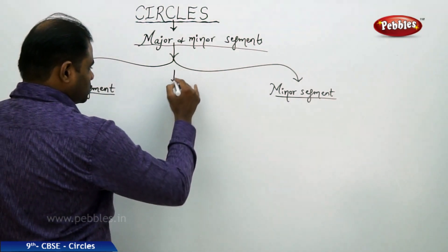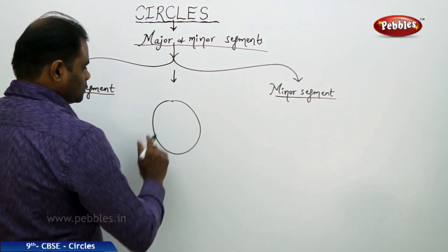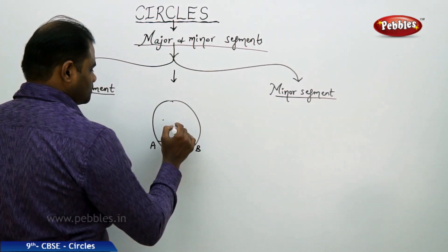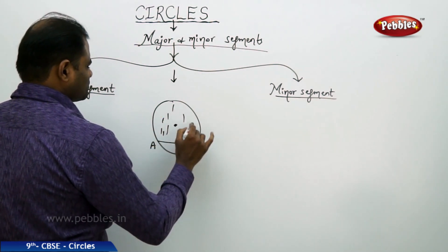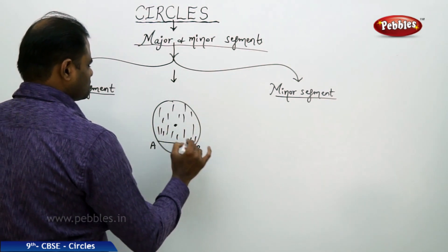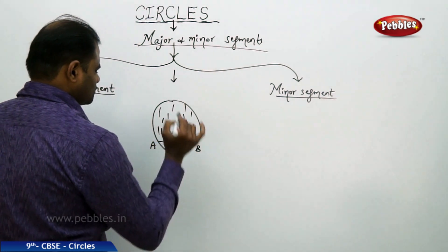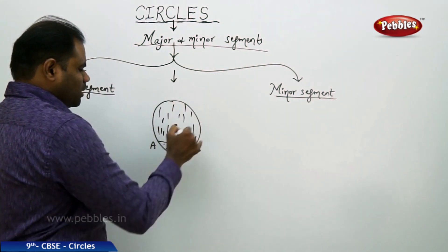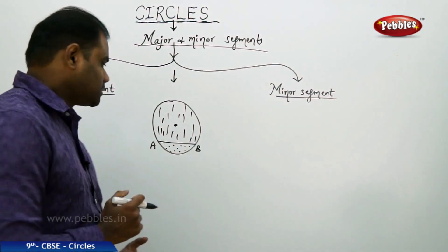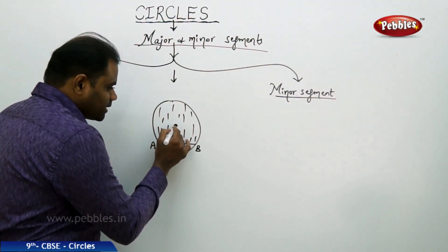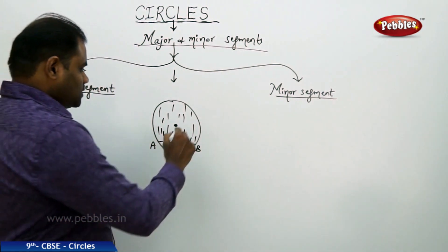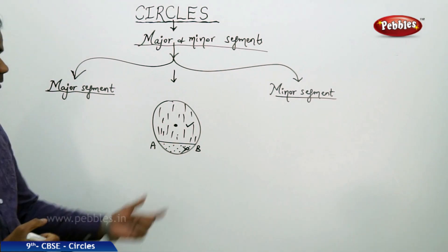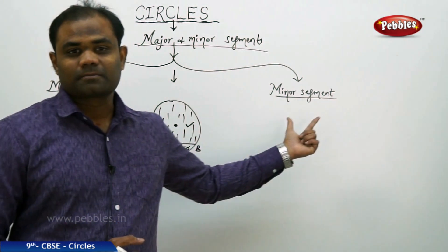Imagine I take a circle with a chord AB. Then clearly I find two regions: segment 1 and segment 2. Geometrically, I identify that there is only one segment which has the center of the circle, and the other does not have the center. This property is how we classify the segments into major segments and minor segments.